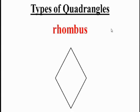The next shape is called a rhombus. A rhombus looks like a diamond. All four sides of a rhombus are exactly equal in length, but unlike a square, the rhombus does not have right angles.